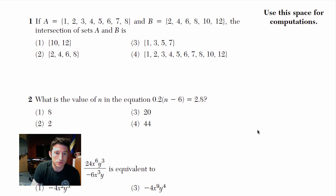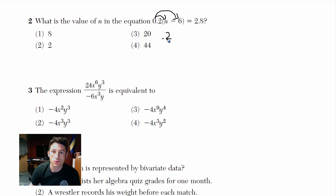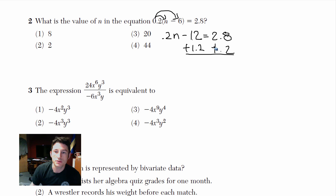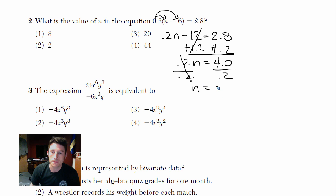Number 2: what is the value of n in the equation 0.2 times (n minus 6) equals 2.8? All you're going to do is distribution — multiply 0.2 by each term. So we get 0.2n minus 1.2 equals 2.8. Add 1.2 to both sides: 0.2n equals 4. Divide by 0.2 — you can use your calculator on test day. 4 divided by 0.2 is 20. n equals 20, choice number 3.